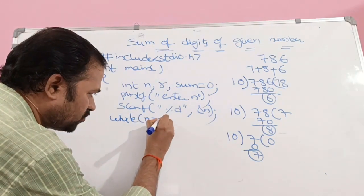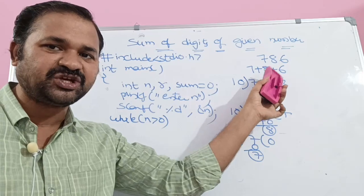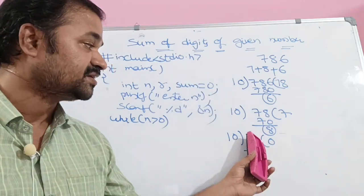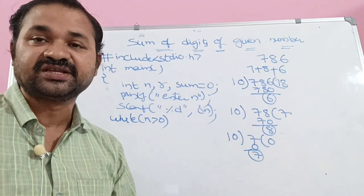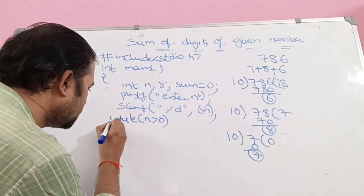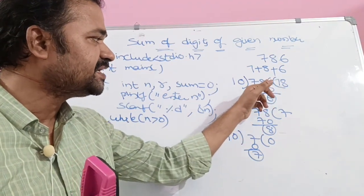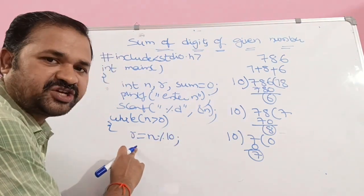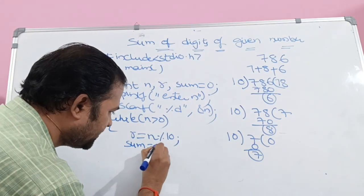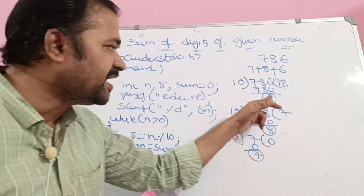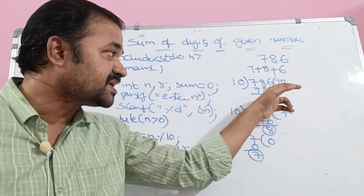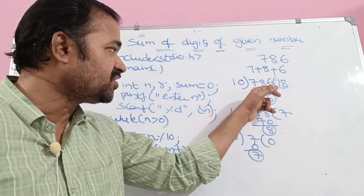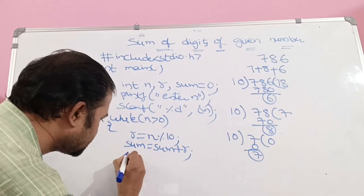While n is greater than zero: first n is 786, which is greater than zero so we continue. Then n becomes 78, which is greater than zero, continue. Then 7 is greater than zero, continue. Then 0 is not greater than zero, so the loop ends. Inside the loop: r = n modulo 10 to get the remainder. Then sum = sum + r to add the remainder to sum. Then n = n / 10 to remove the last digit. When the condition becomes false, we display sum.